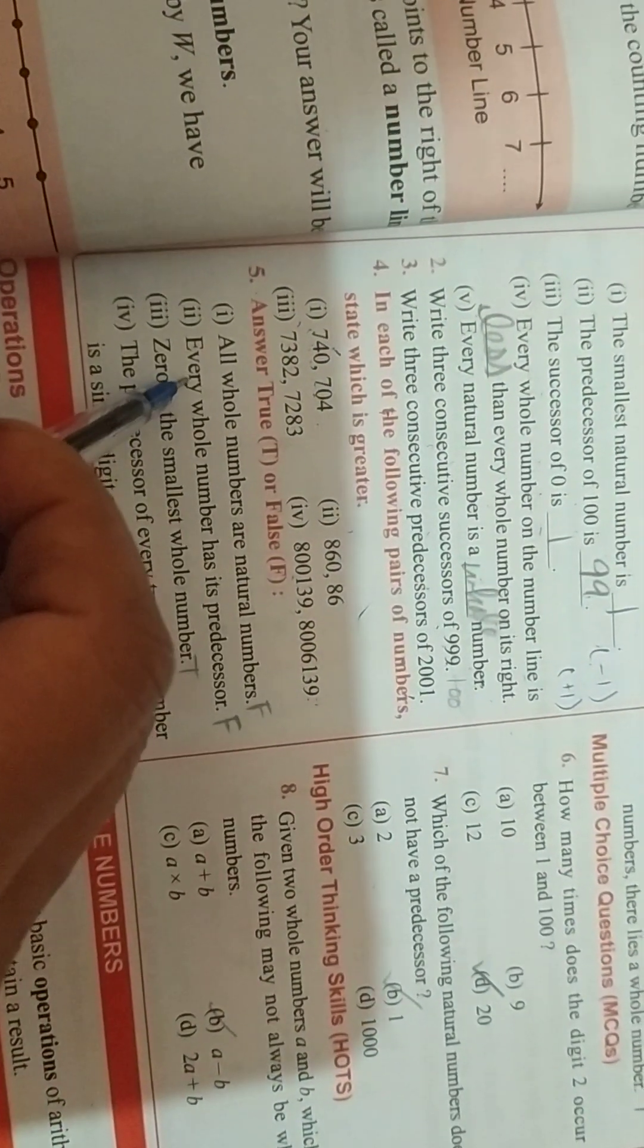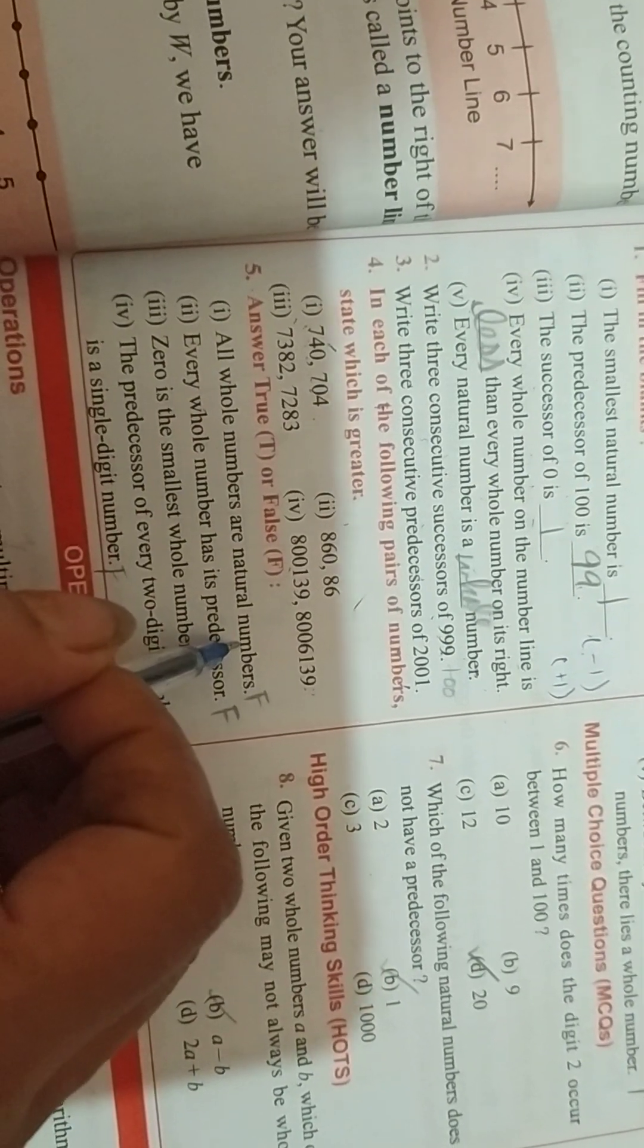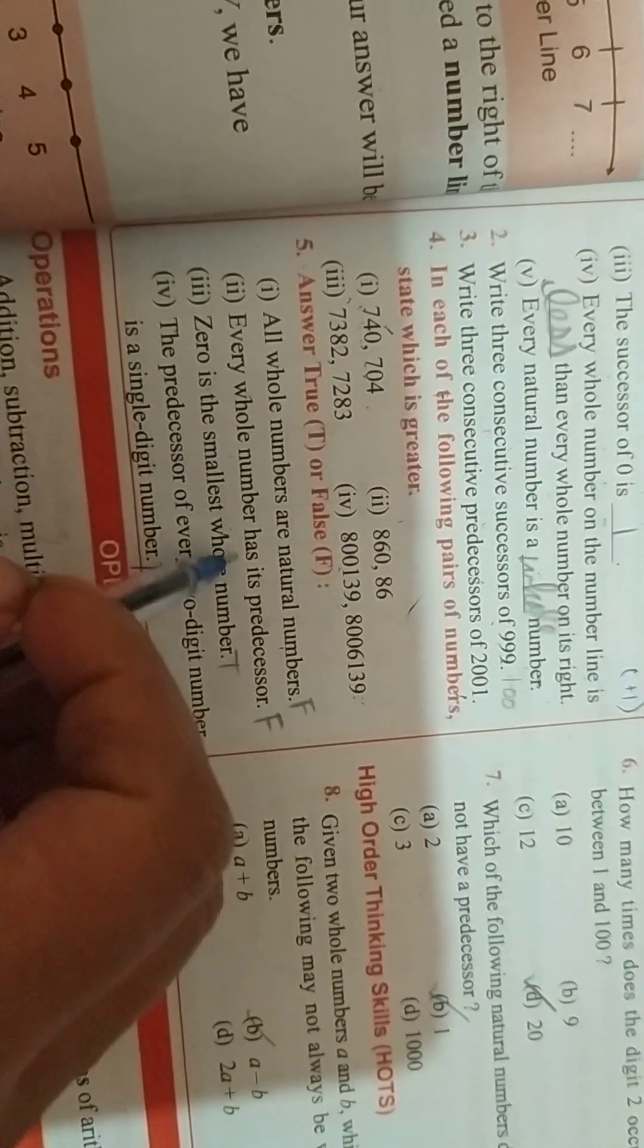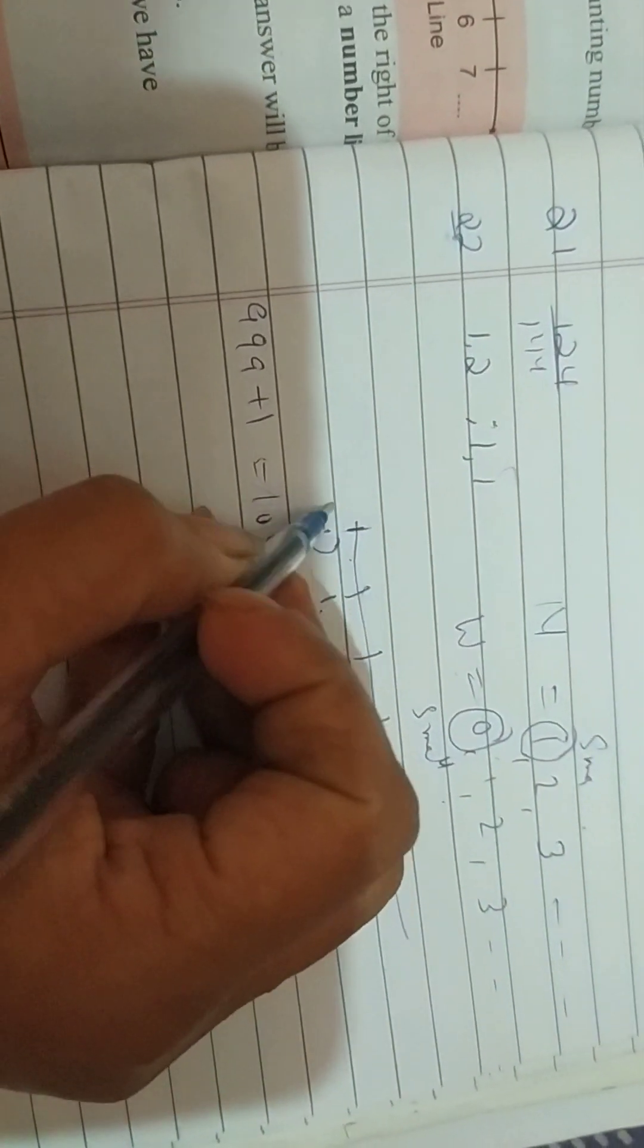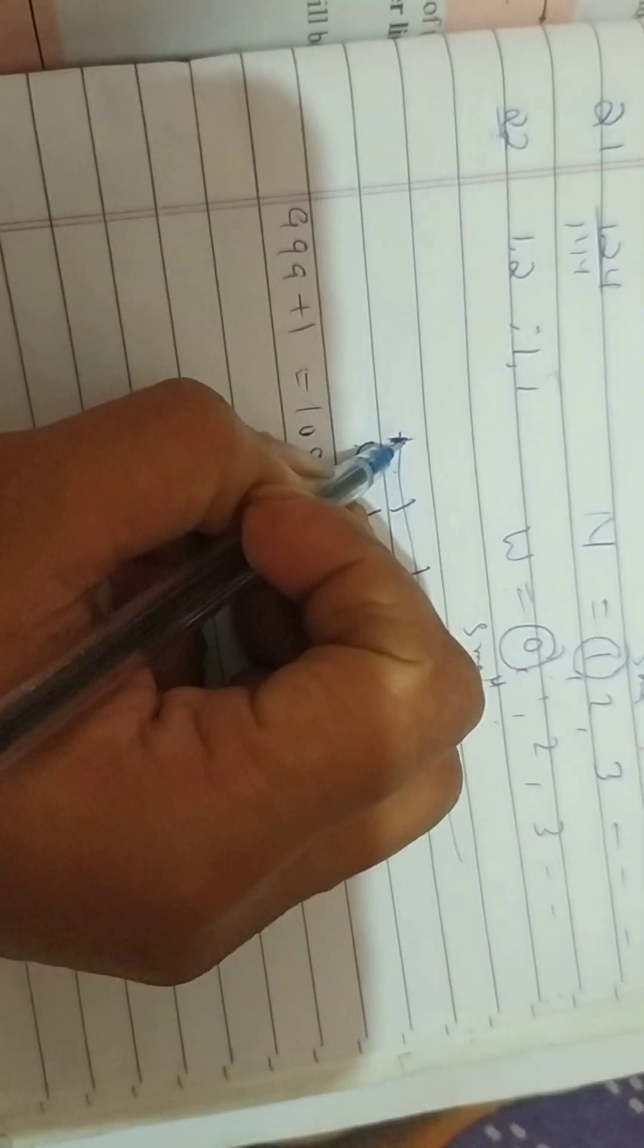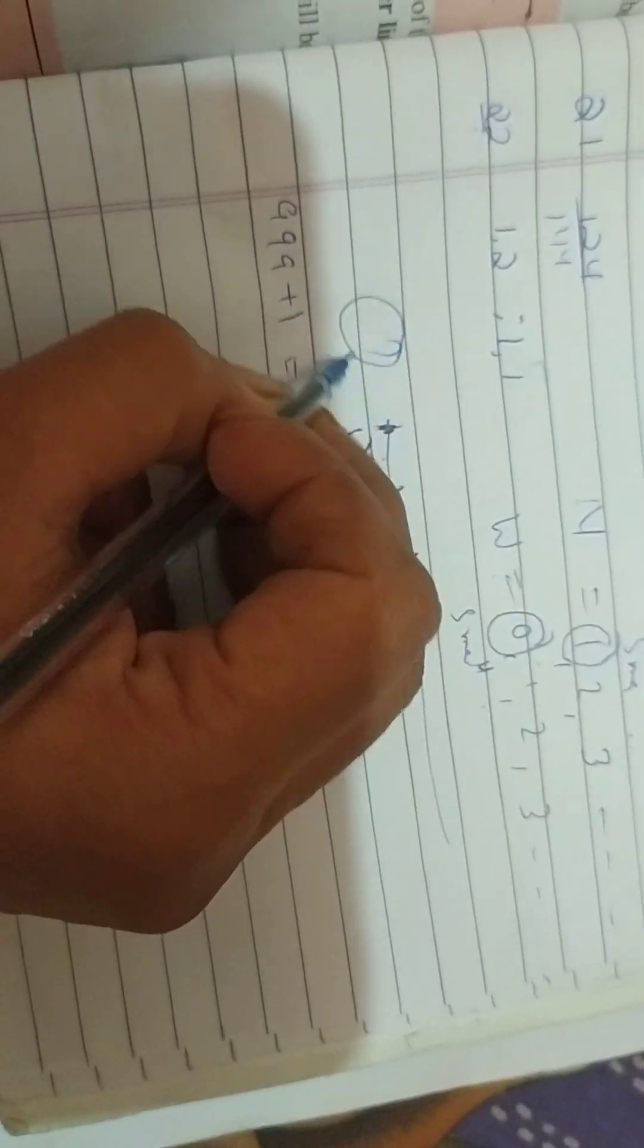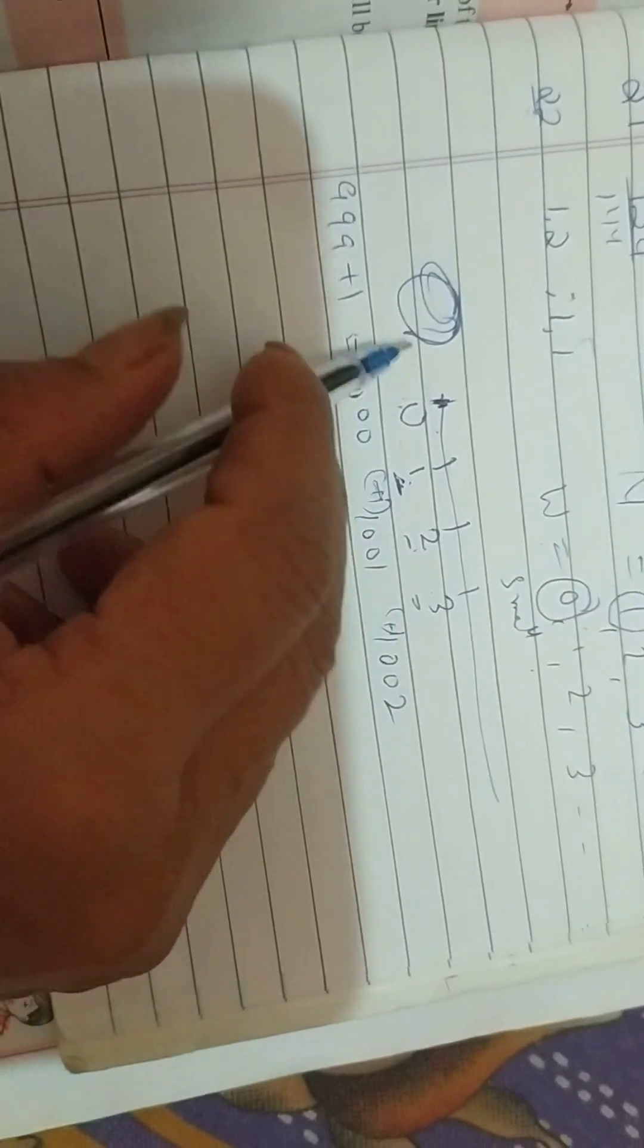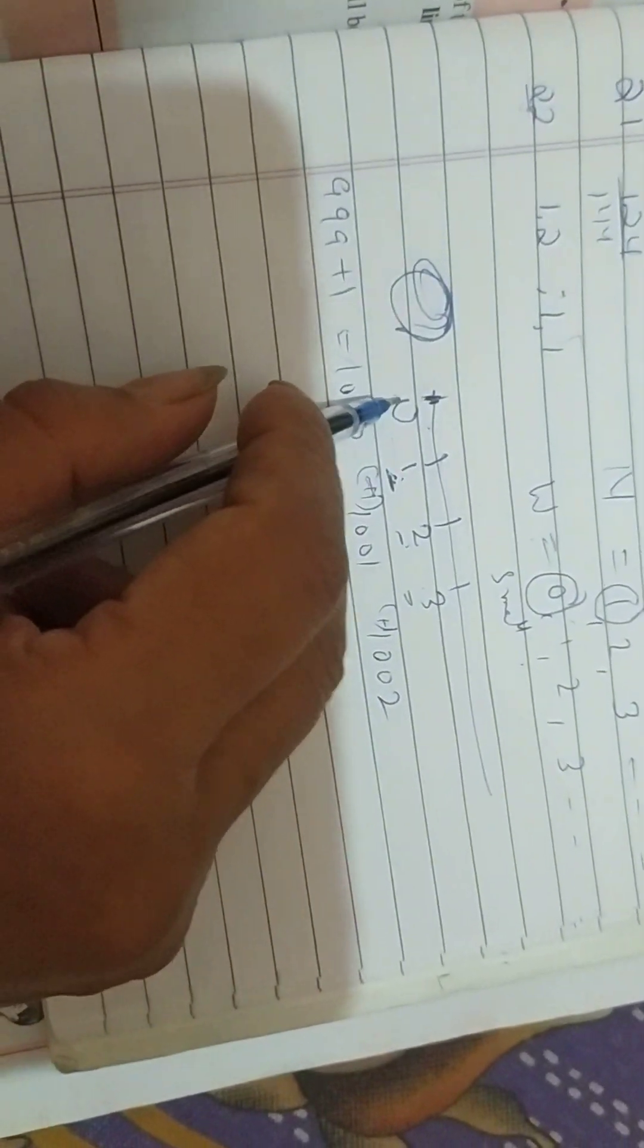True, false. All whole are natural? No. Every whole has its predecessor? No. Because 0. 0 is not having any predecessor. There is no number.